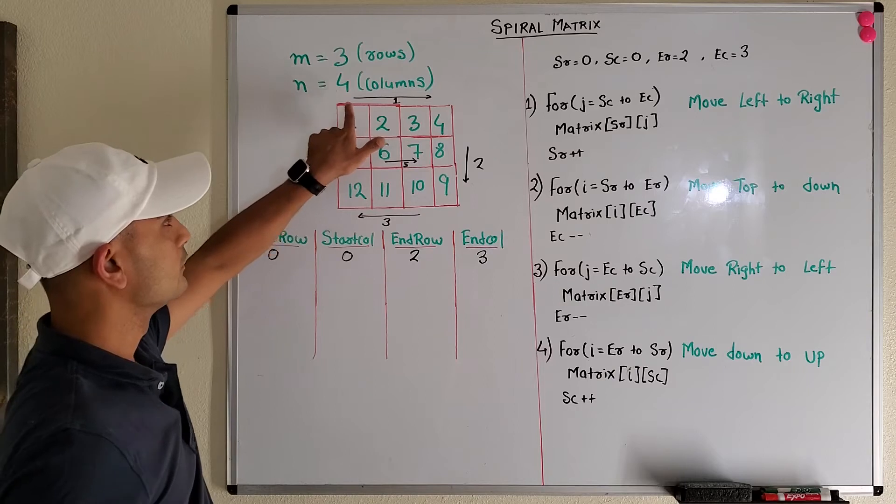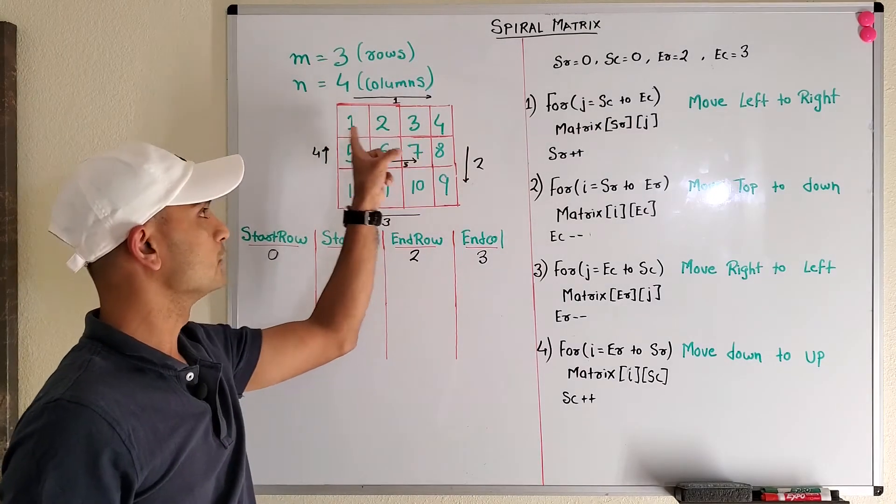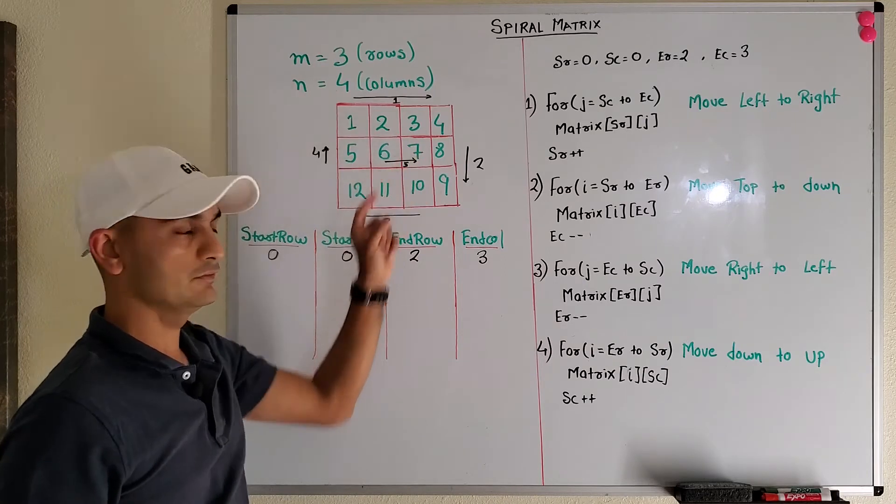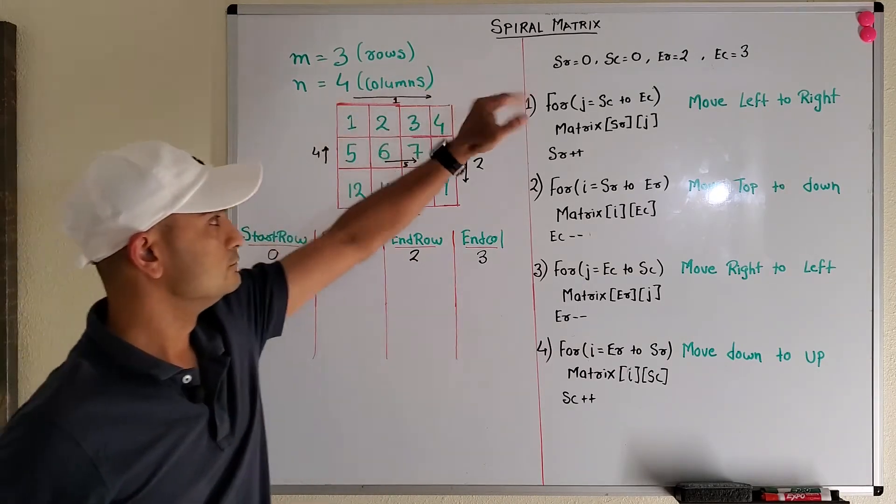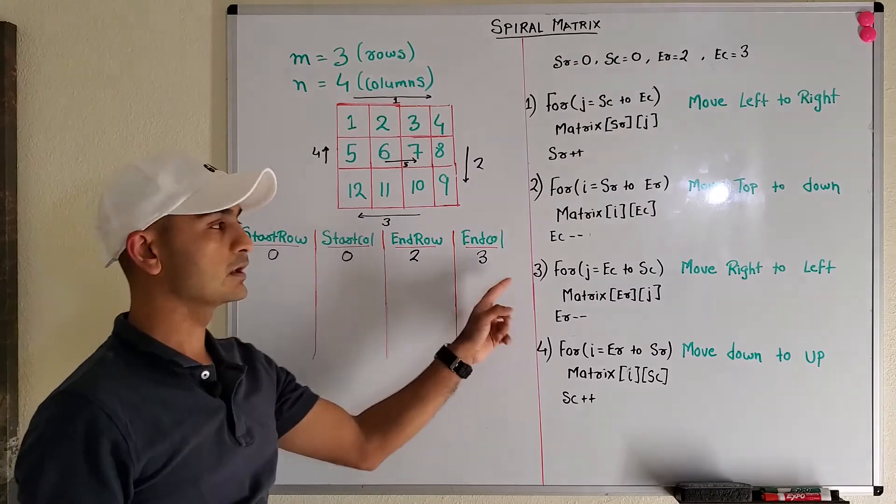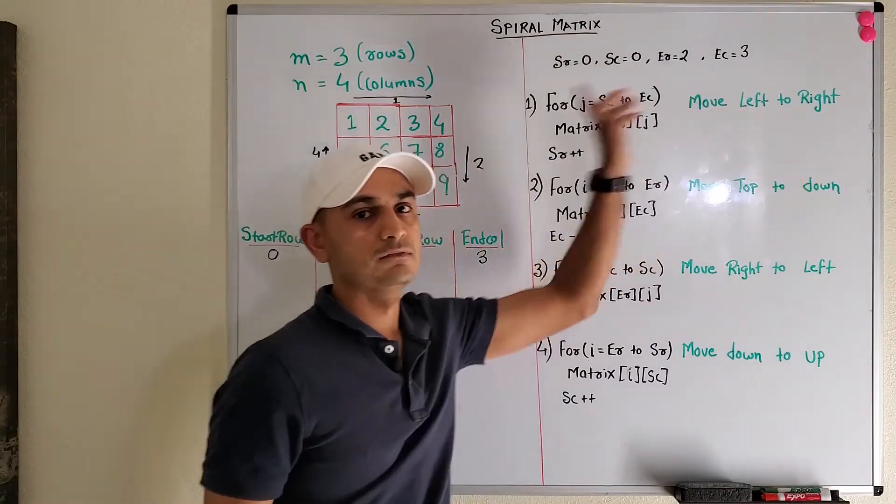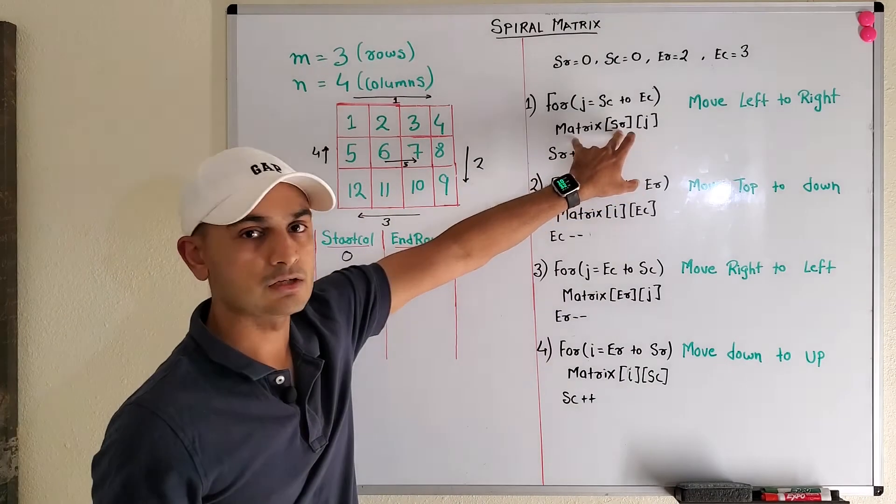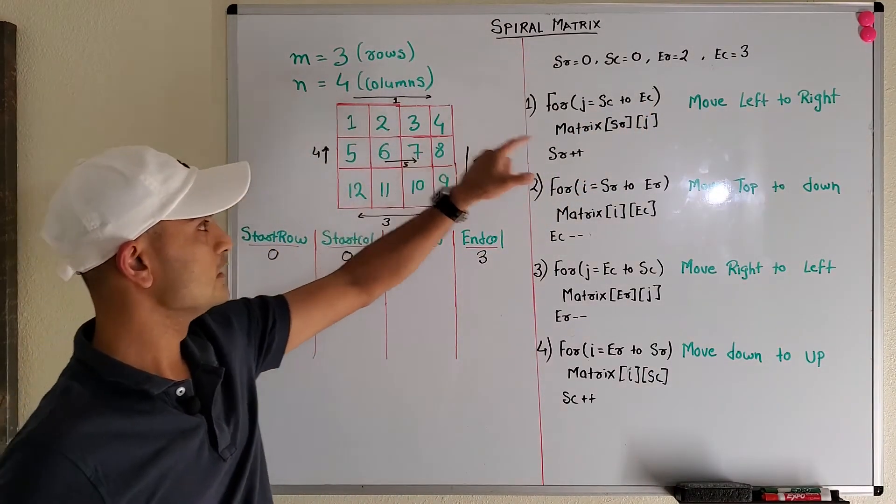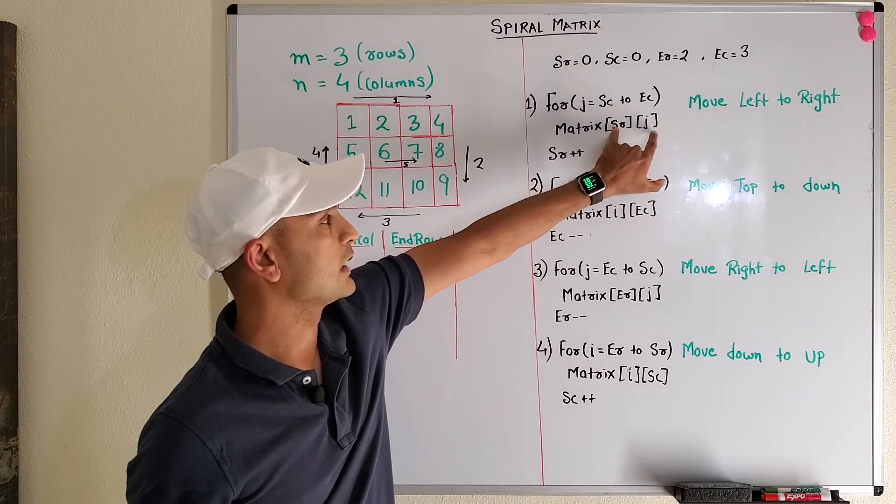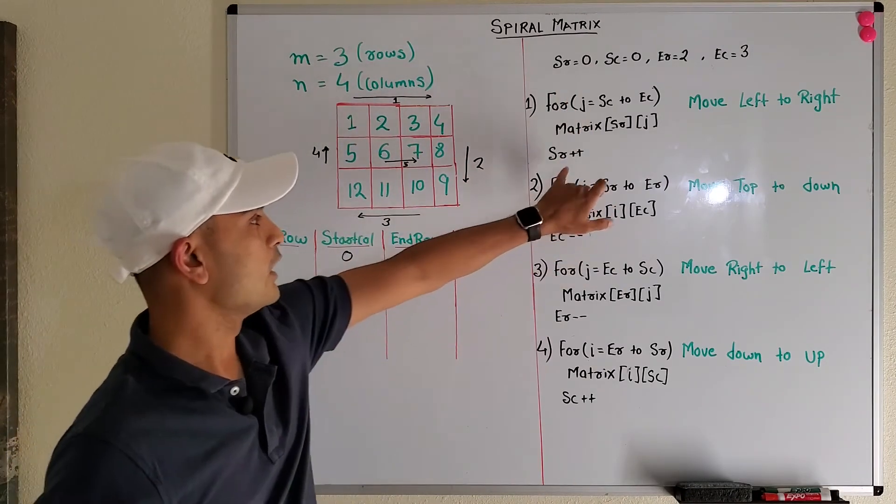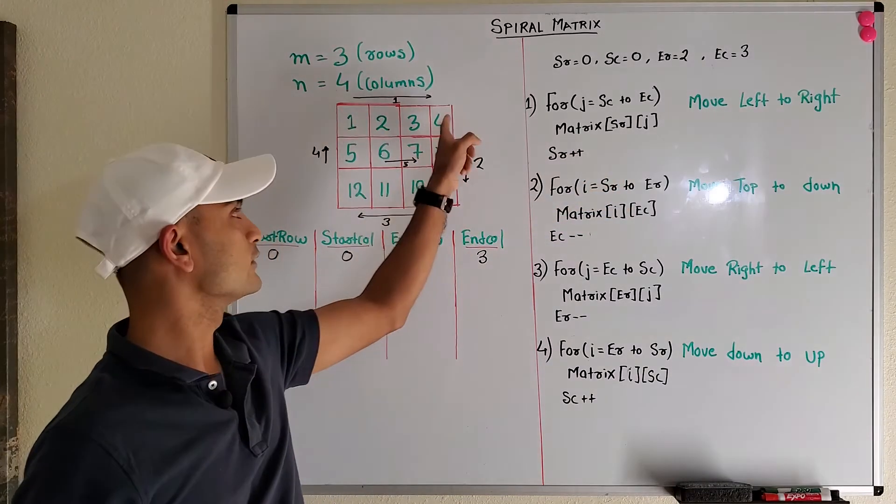First, we need to traverse horizontally from left to right: one, two, three, four, then eight, nine, then ten, eleven, twelve, then five, six, seven. This is our code which will implement this logic. First, we move left to right in the first row, so we use matrix of start row, which is zero, and we loop from start column to end column, from zero to three. So we access the zero-th row and get all the elements: one, two, three, four. Then we do start row plus plus, we've finished this row, so nobody accesses this row. Start row becomes one.